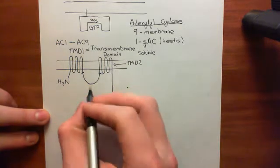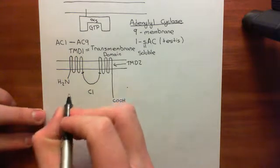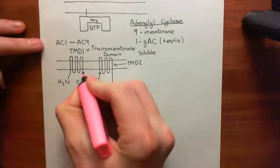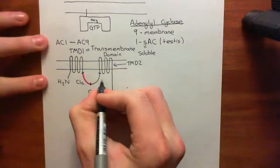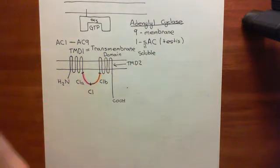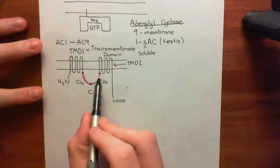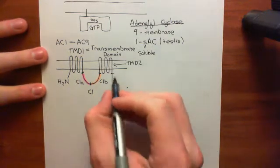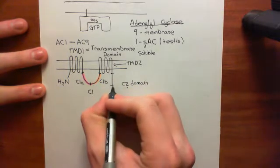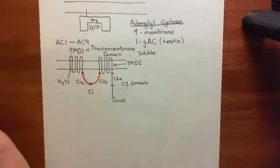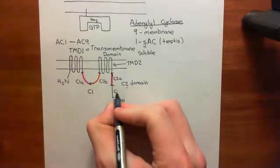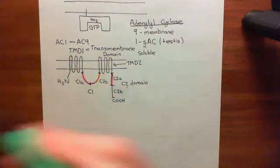This loop between transmembrane domain 1 and transmembrane domain 2 is known as the C1 domain, which can be further divided into two portions: the C1A domain, highlighted in pink, and the C1B domain, highlighted in orange. Meanwhile, the domain after transmembrane domain 2 is known as the C2 domain, which can also be split into two portions: the C2A portion, which is closer to transmembrane domain 2, highlighted in pink, and the C2B domain, which is closer to the carboxylic acid tail, highlighted in green.